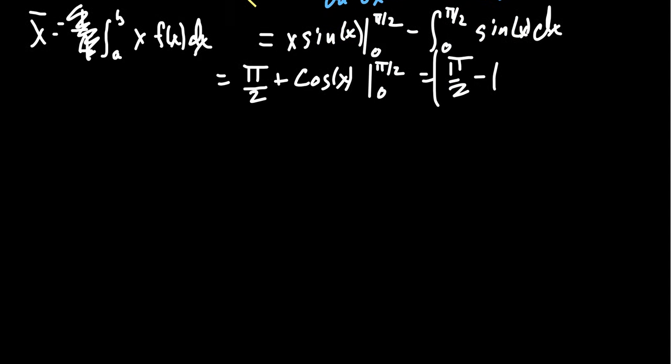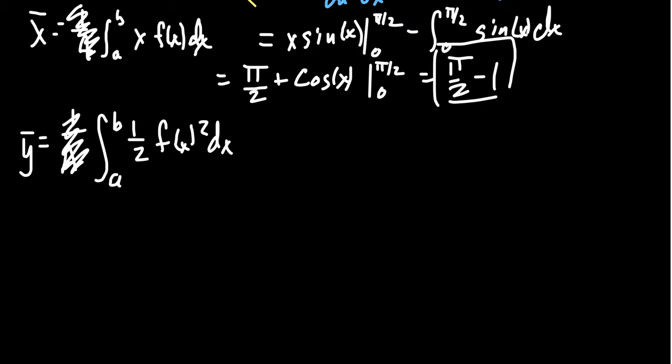Let's put a box around the answer there. How about y-bar? What is that going to look like? For y-bar, we have the formula 1 over the area times the integral from a to b, 1 half f of x squared dx. The area in this case is 1, so we can ignore it. Proceeding forward, our integral would look like the integral from 0 to pi halves, 1 half cosine squared of x dx.